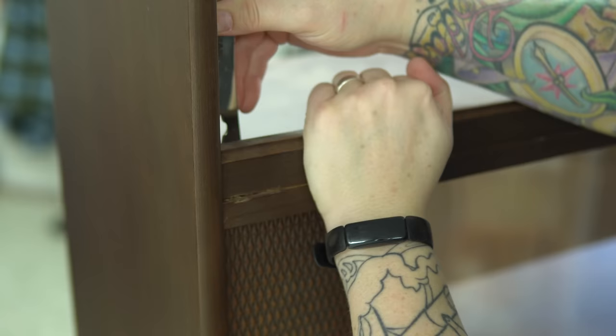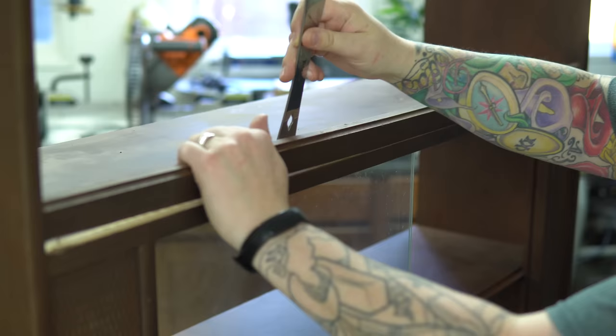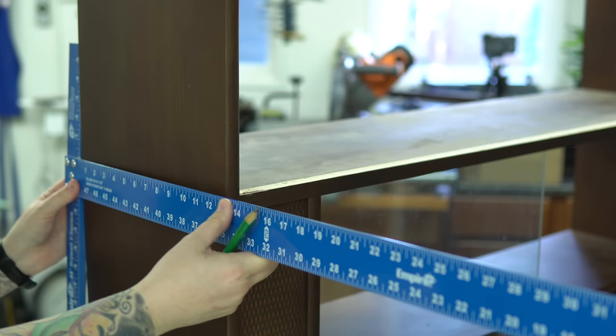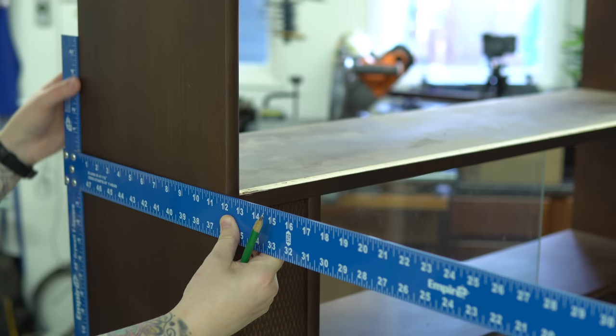I have to remove this trim piece so that I can get at the sides, which I am going to be cutting flush to the bottom, which because this piece is upside down, you see as the top.